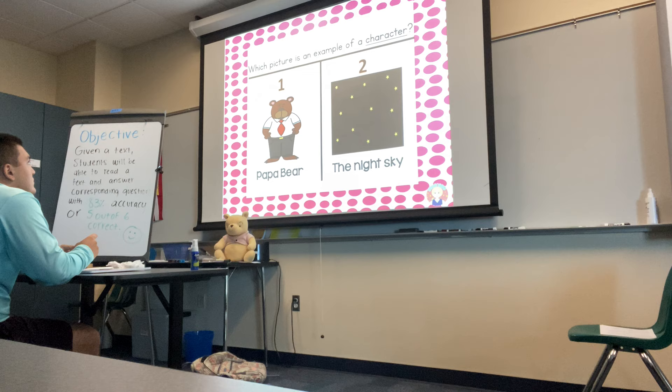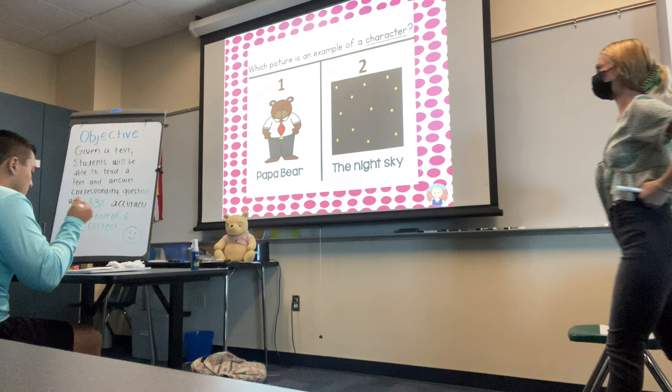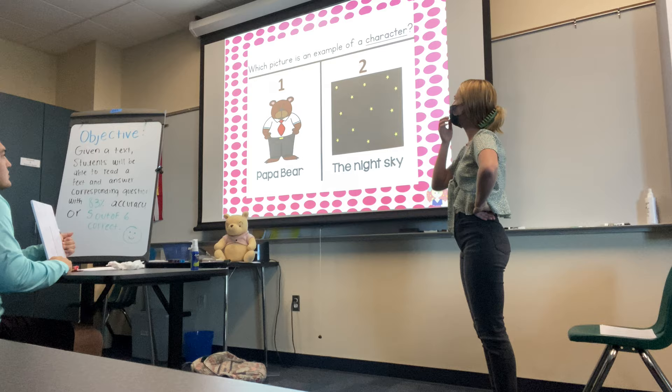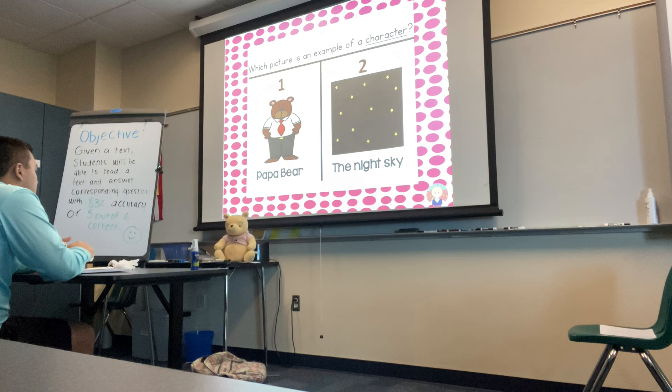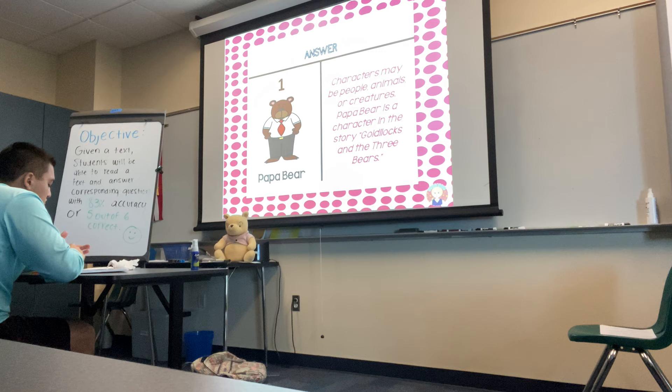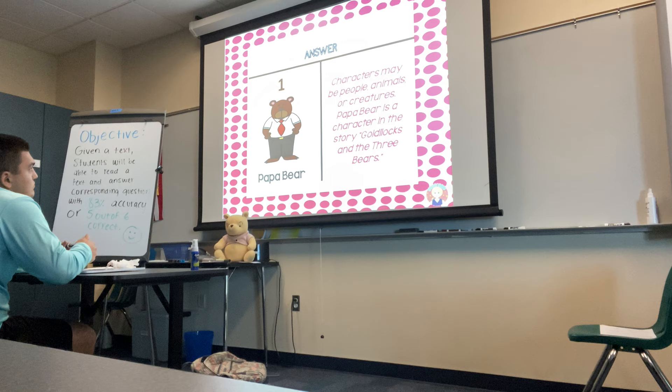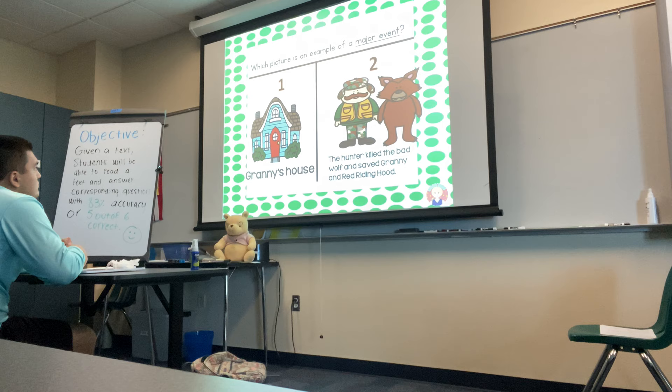Now for this one, we're going to determine which is a picture of a character — number one or number two? Write it down on your board. Number one, again. Why is number one a character? Because it's an actual being — yes, it's an animal that can think, feel, or act. Characters may be people, animals, or creatures. Papa Bear is a character in the story Goldilocks and the Three Bears.